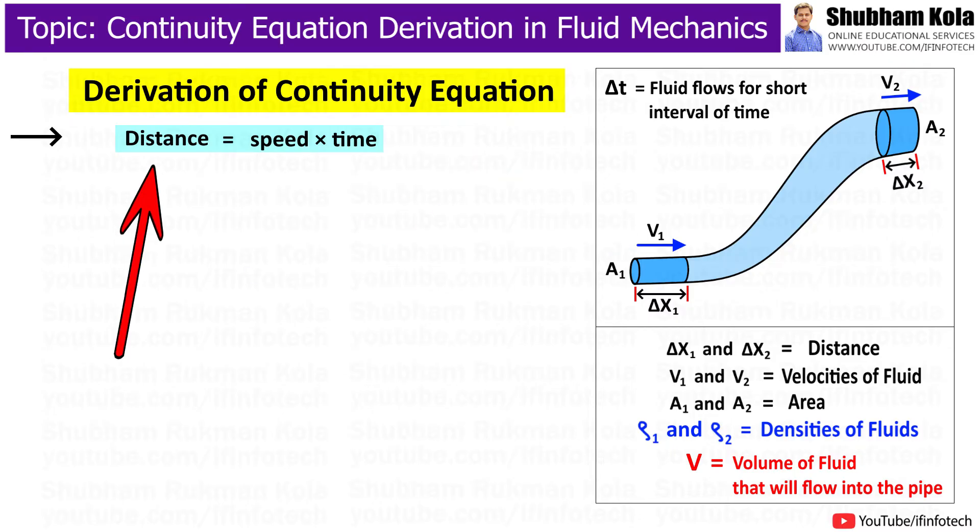And we know that distance equals speed times time. Therefore, delta x1 equals v1 times delta t.